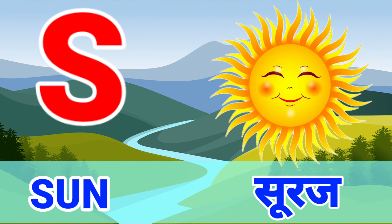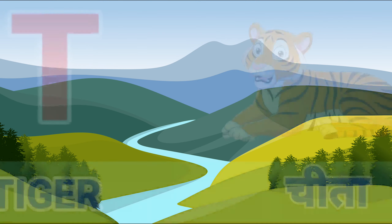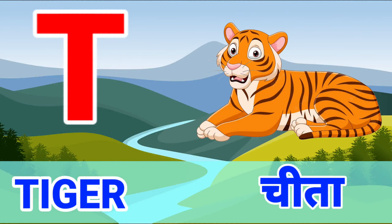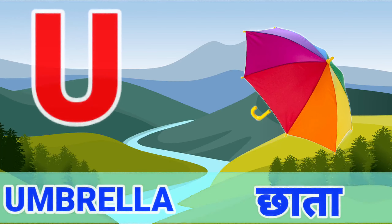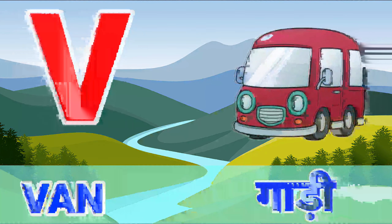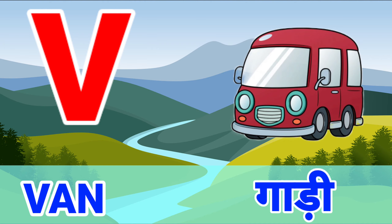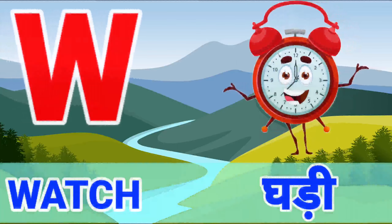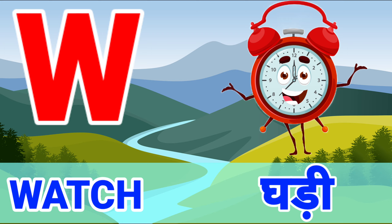S for sun, T for tiger, U for umbrella, V for van, W for watch.